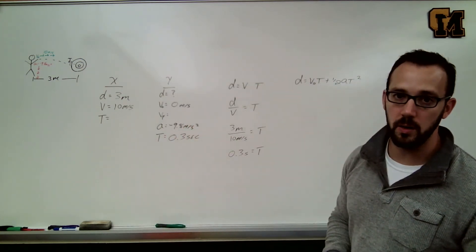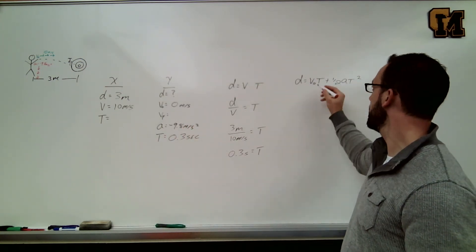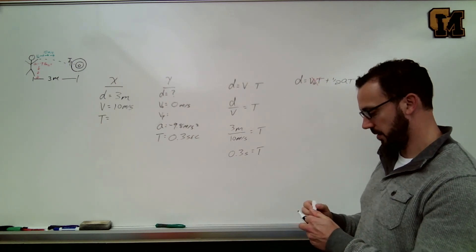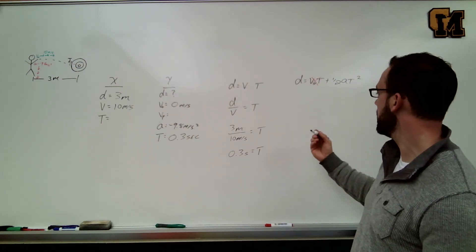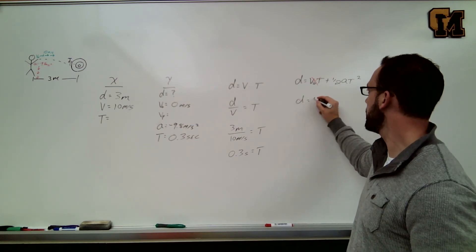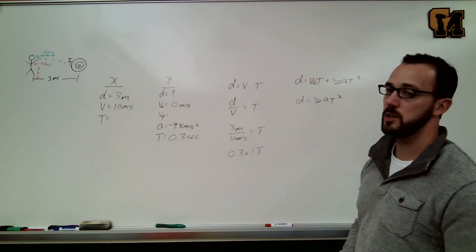V naught is 0 in horizontal projectile motion, so since v naught is 0, I can make that v naught term just go away. It could make my math a little bit easier, so now I only have d equals 1 half a t squared.